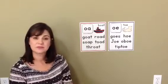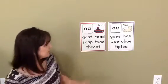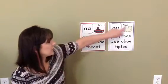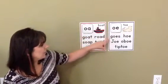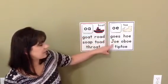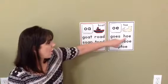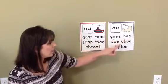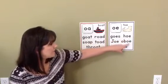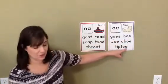Let's come up with some OE words: toe, goes, the name Joe, ho ho, oboe, and tiptoe.